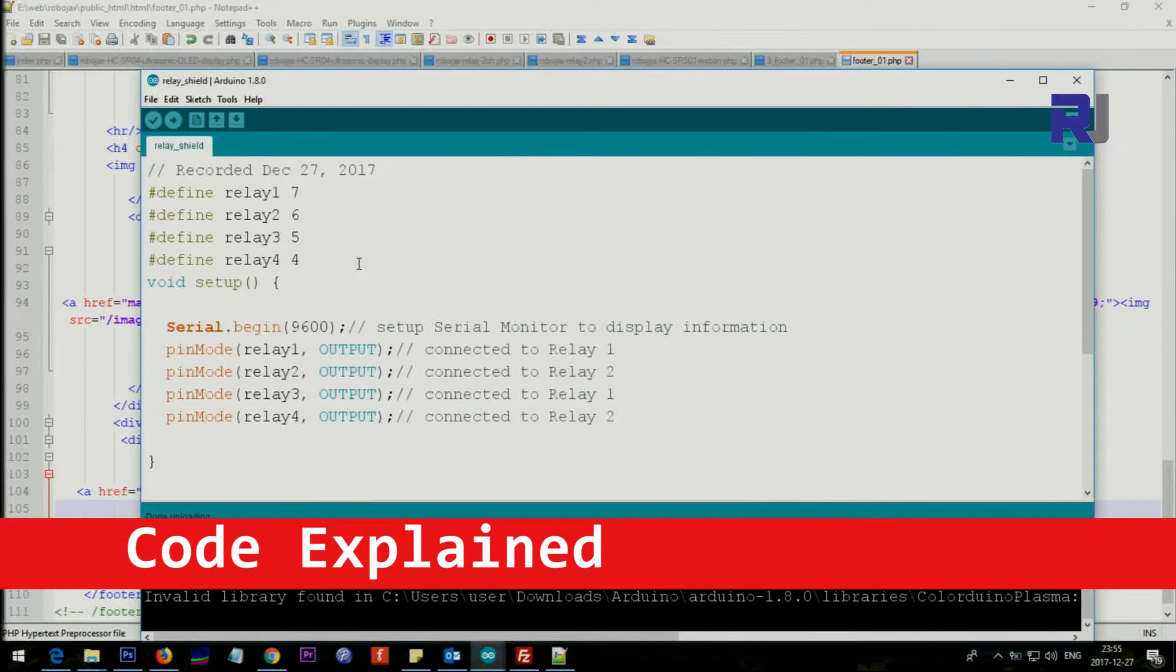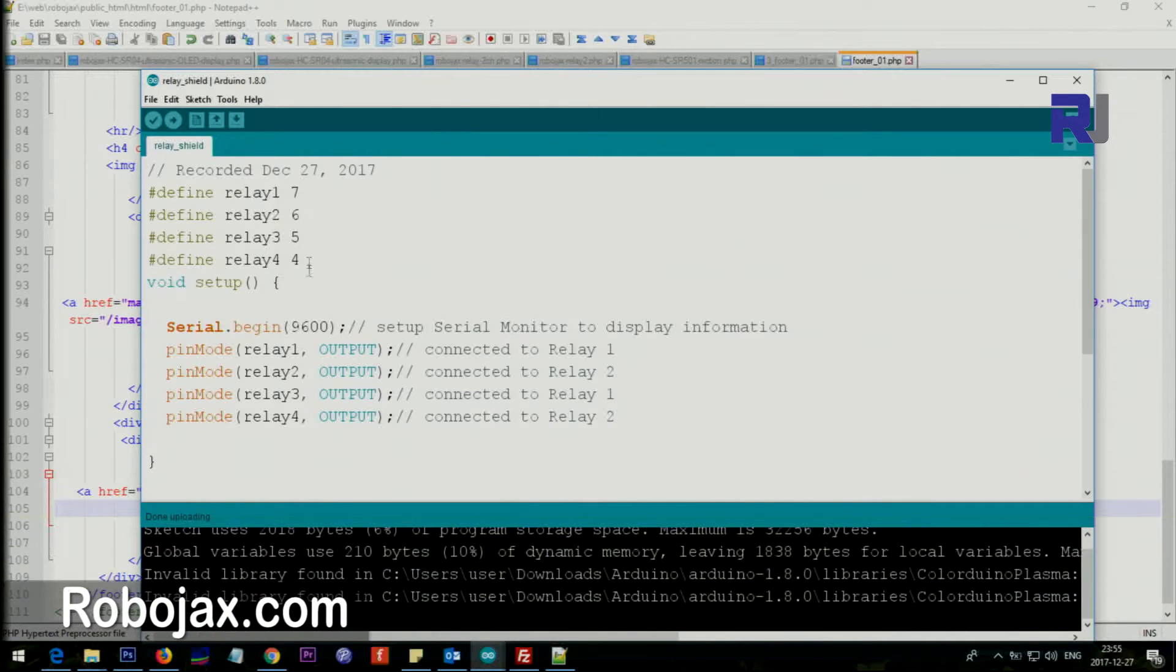So this is the code that I wrote for this. Because the pins were very confusing: pin 7 is 1, 6 is for relay 2, and 5 is for relay 3, and 4 is for relay 4.